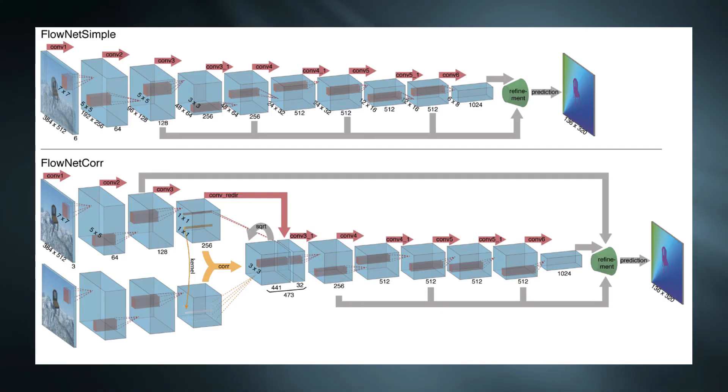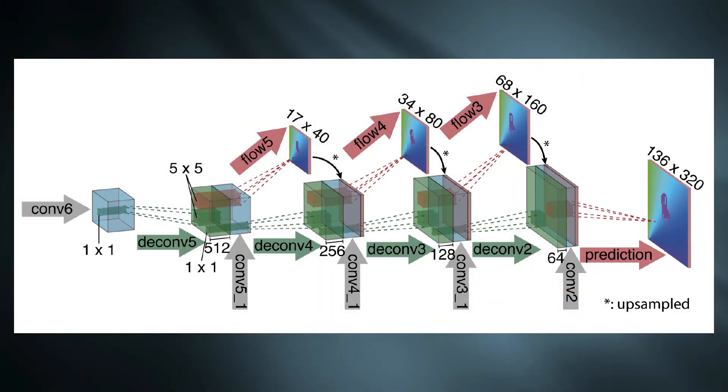The features from contracting part are also skip connected to the refinement layers. Now, in the refinement part, basically feature maps are scaled to original resolution to provide per pixel flow prediction.